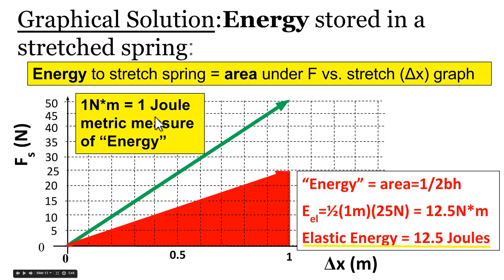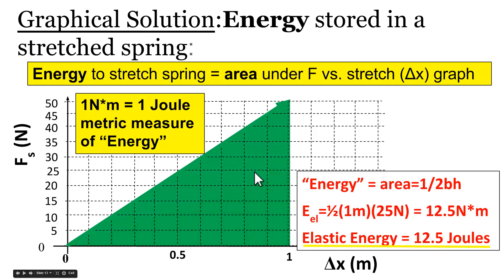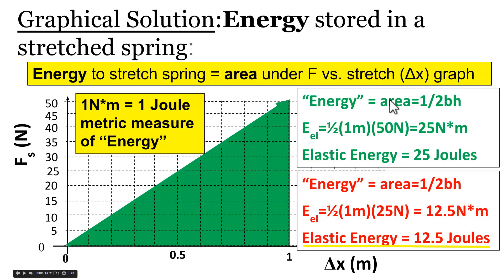In physics, we use the joule to represent a newton times a meter — our metric measure of energy. Now let's do the same for the green spring. That spring was stronger or stiffer, requiring more force per meter to stretch it. We'd expect stretching it one meter stores more energy. The triangle shaded under the green line on the force versus stretch graph gives us one-half times one meter times 50 newtons, which equals 25 newton-meters, or 25 joules.